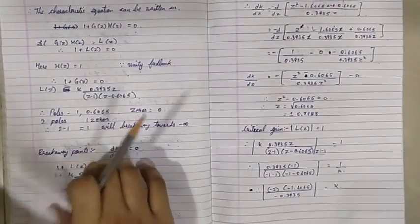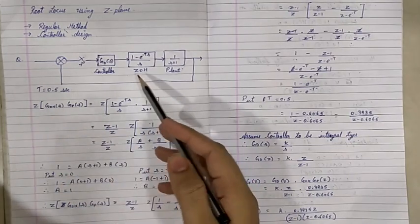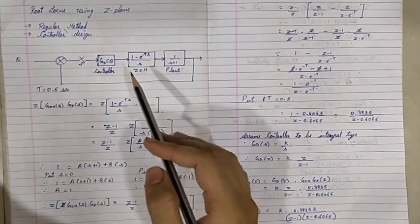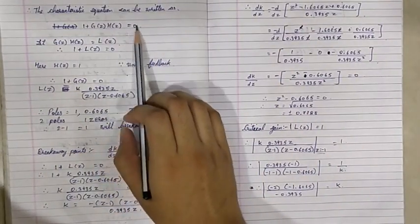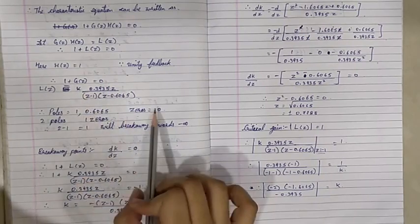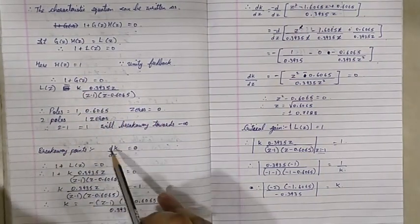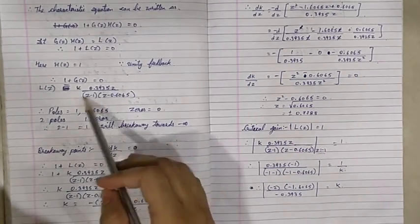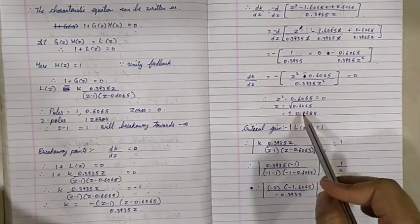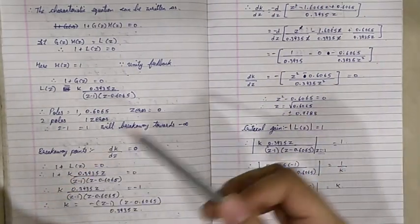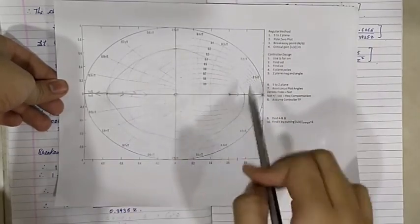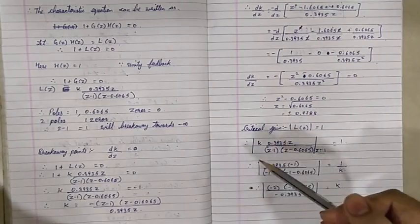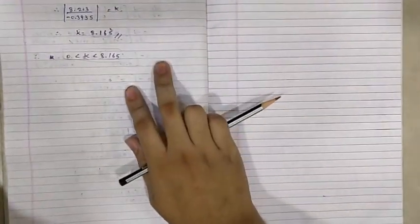So that is the regular method. The first step is to find the Z transform, converting from the S plane to the Z plane to get G(Z). Then using the characteristic equation 1 plus G(Z)H(Z) equals 0, you get L(Z), from which you get your poles and zeros. Then find the breakaway points using dK/dZ equals 0. After plotting the root locus with poles, zeros, and breakaway points, find the critical gain K for which the system becomes stable. Thank you guys.